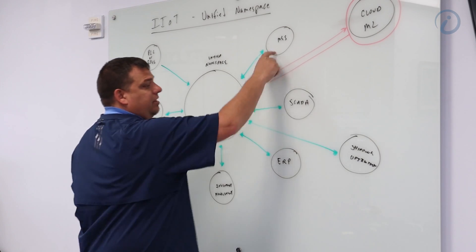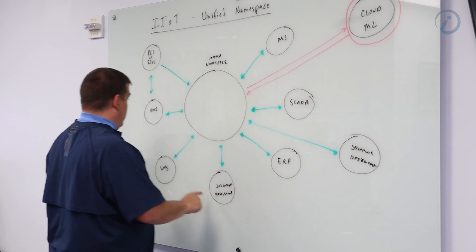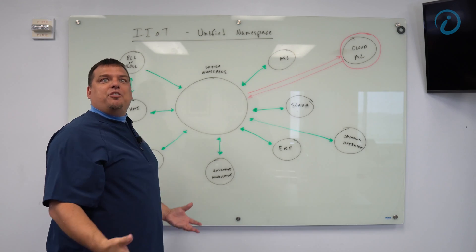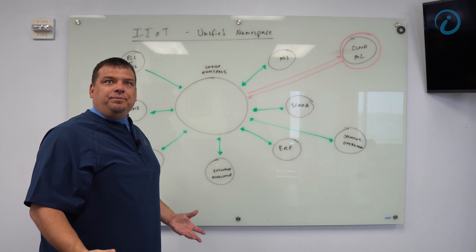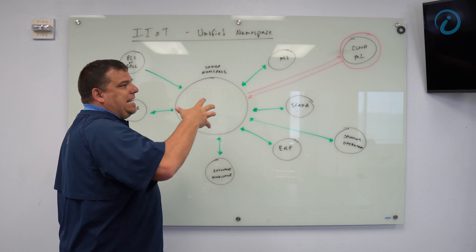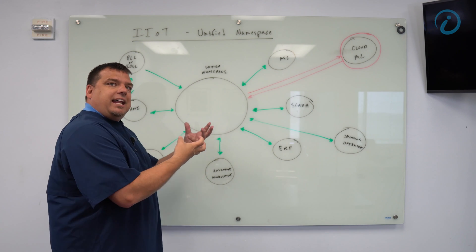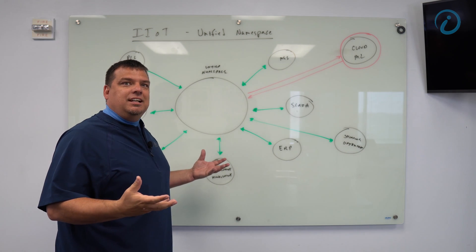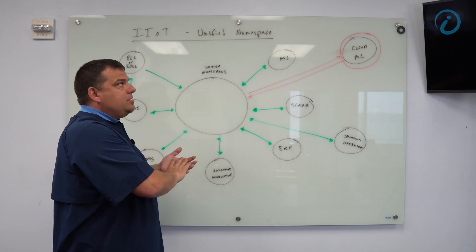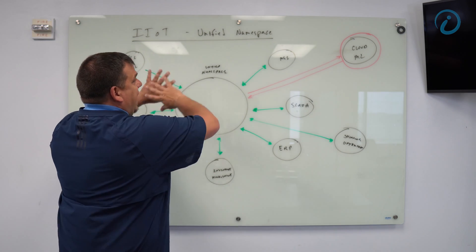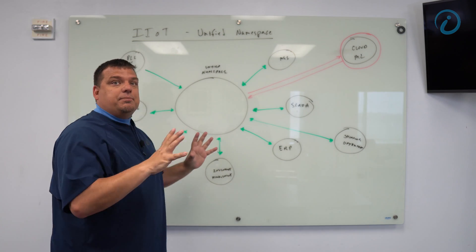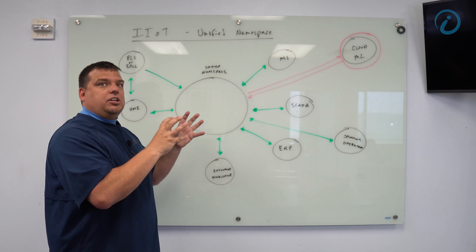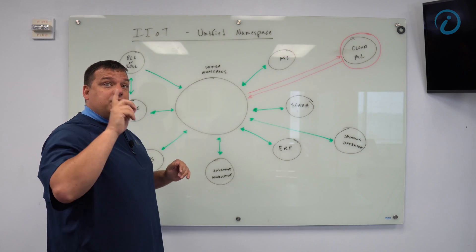That's what the Unified Namespace is. Right now you have a namespace here, here, here, here, here — in every other application. And you can't scale that into an IIoT application until you normalize it. You have to do that through a Unified Namespace. That is the concept of the Unified Namespace in IIoT, and a quick touch on why it ultimately matters.